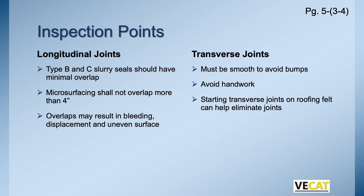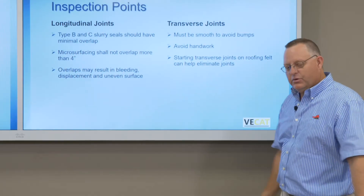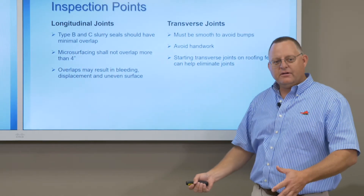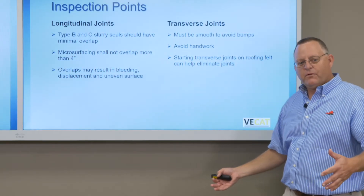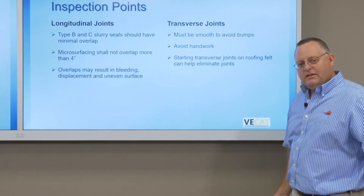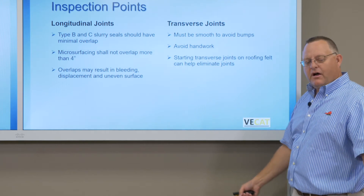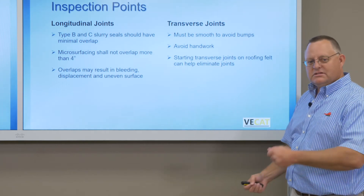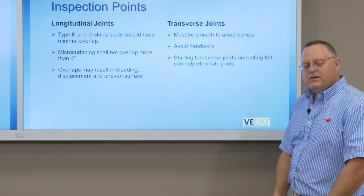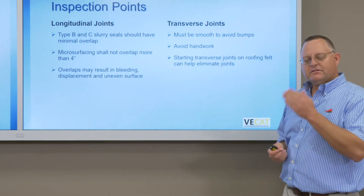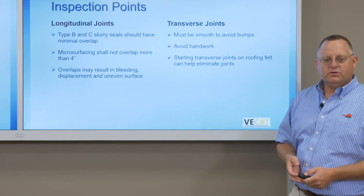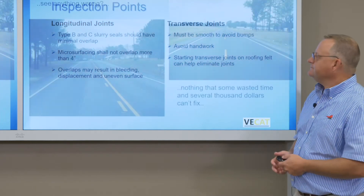We want the equipment to do its work. Starting transverse joints on roofing felt can help eliminate joints — put the roofing felt down about three to four feet, start pulling off, then once you pull off, pull that felt up and it'll make a nice, straight, smooth joint.